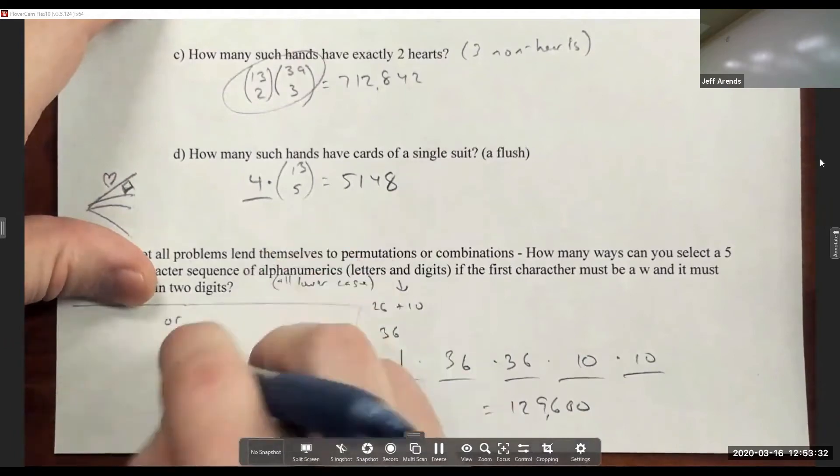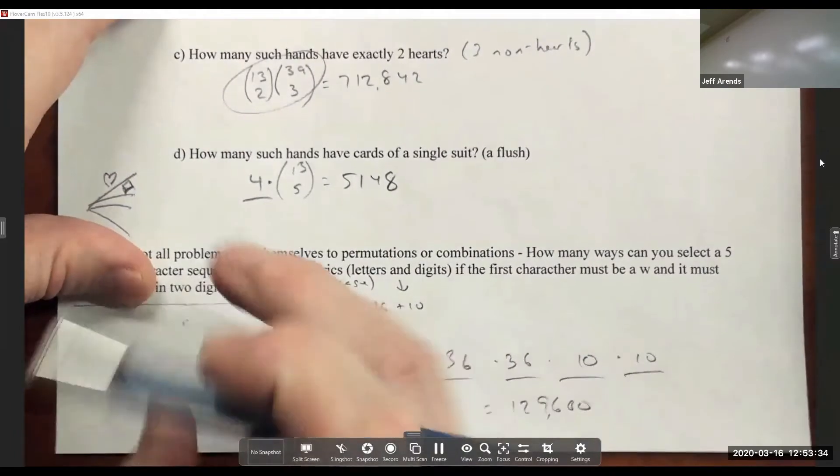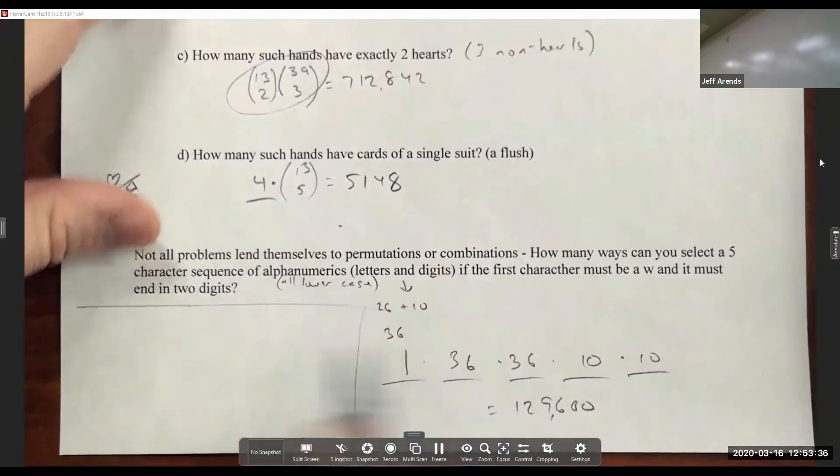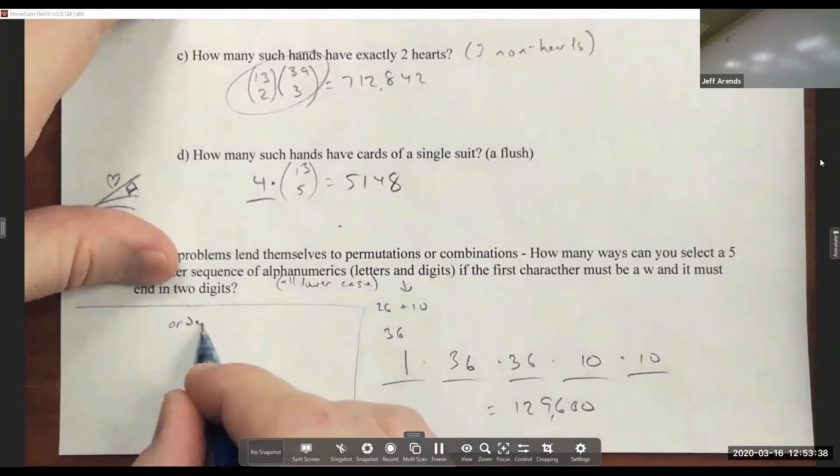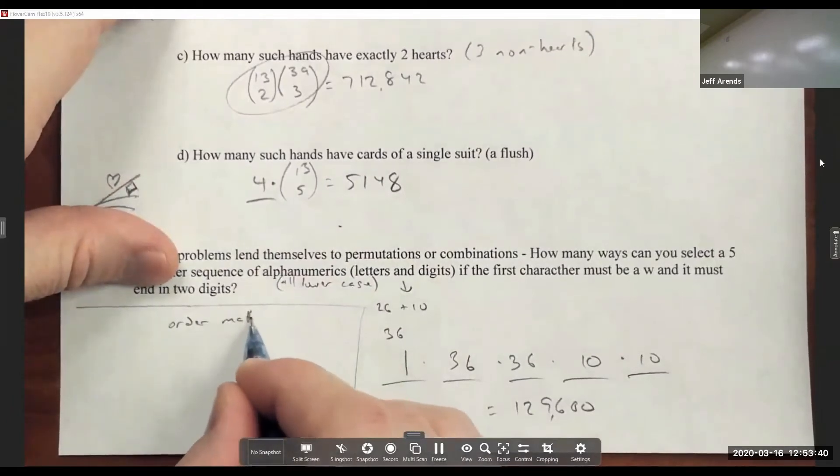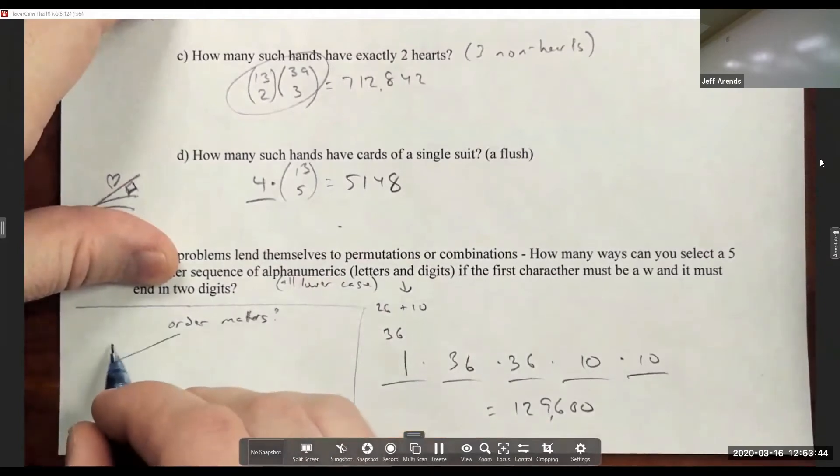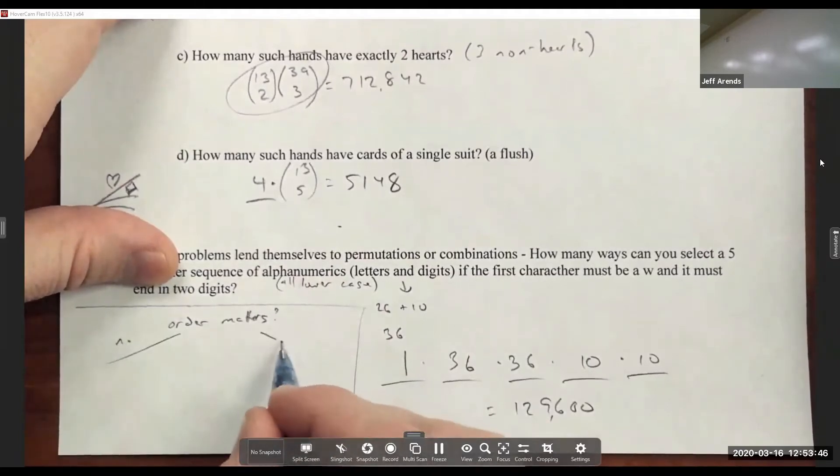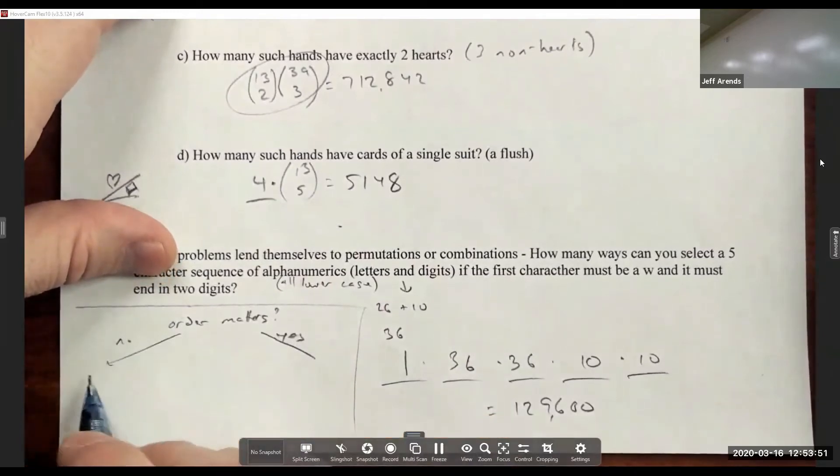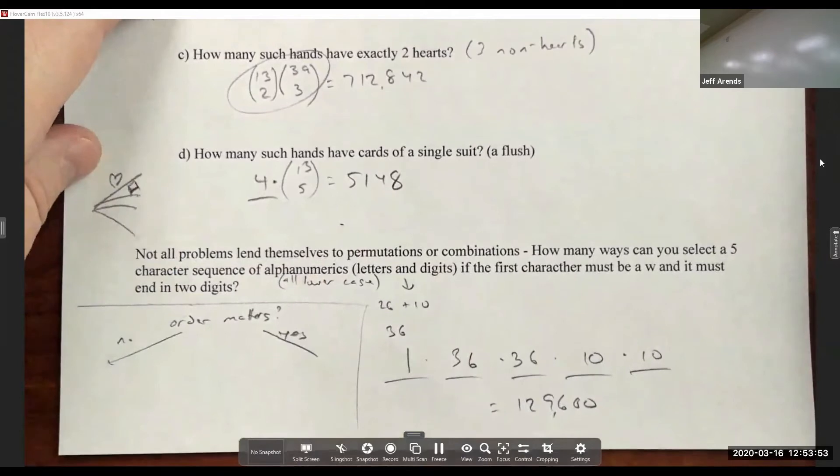Here's a little bit of a flow chart that might help you decide between these different counting techniques. If order matters, let's say no versus yes. If order does not matter, then you're almost guaranteed that in this class we're talking about a combination problem.